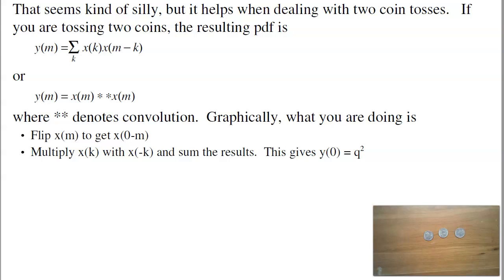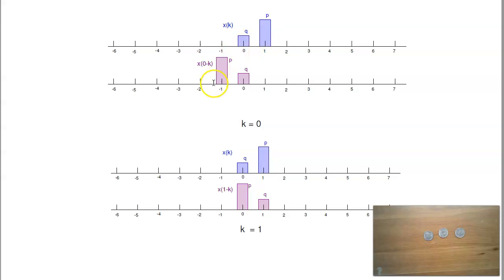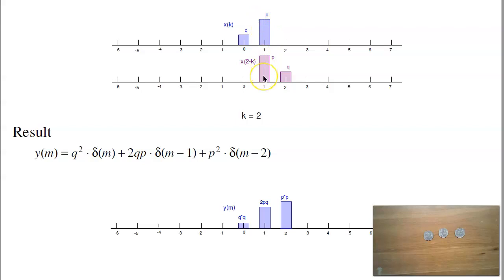Graphically, what you're doing is I'm taking x of k times x of m minus k. When m equals zero, I'm right here. The minus k means you flip it. The p goes over here on the left, and I start at zero. Multiply the two together, and I get q squared. So probably getting a zero is going to be q times q, q squared, just like we calculated. Probability of getting one head. Shift this to the right by one. Now I'll multiply and add. I get p times q plus q times p gives you two pq. That's probability of one head. Probability of two heads, if I shift right again, is p squared. Three heads, shift right again, I'm going to get zero because nothing lines up anymore. So when I convolve the two together, I get q squared at zero, 2pq at one, p squared at two. That's convolution.